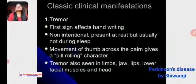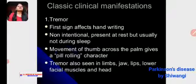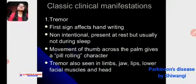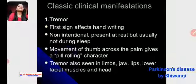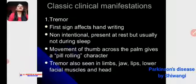Classic clinical manifestation — tremor: the first sign is effect on handwriting. It is non-intentional, present at rest but usually not during sleep. Movement of the thumb across the palm gives a pill-rolling character. Tremor is also seen in the limbs, jaw, lips, lower facial muscles, and head.